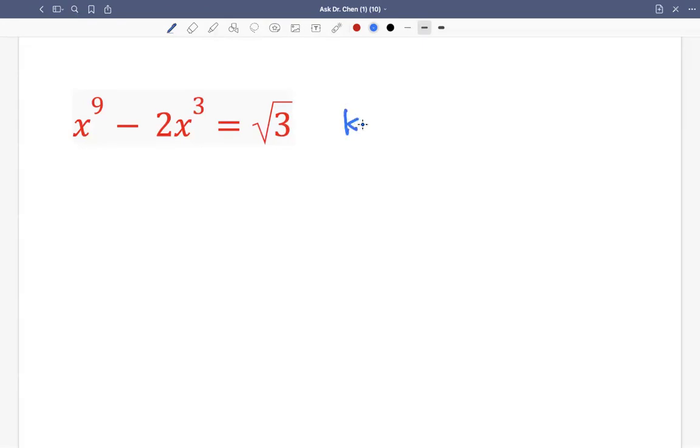So maybe we use a variable k, we let k equals to x cubed. Then we can rewrite this equation in terms of k. So there's k raised by 3, because x raised by 9 can be written as x raised by 3, again, raised by 3. Then x raised by 3, we call it k, so we have k raised by 3. Then minus 2k equals to radical 3.